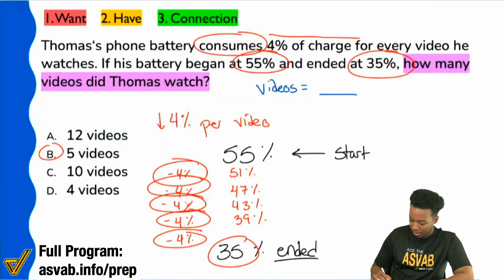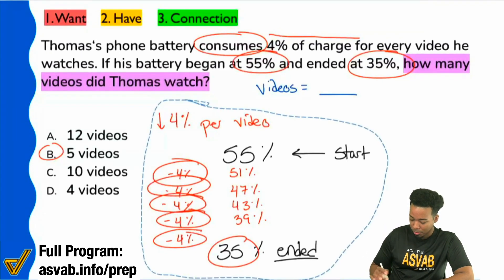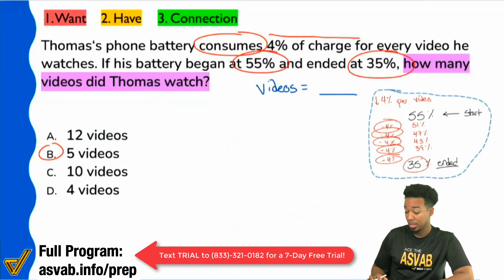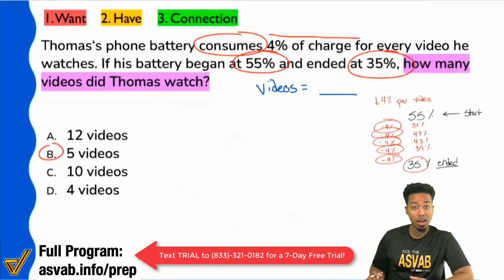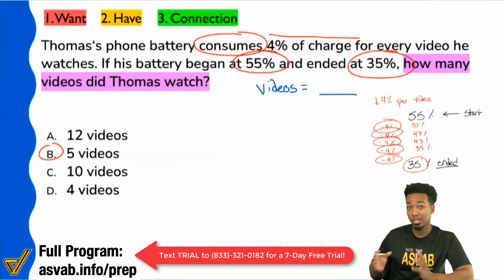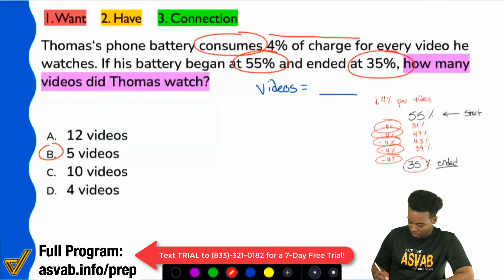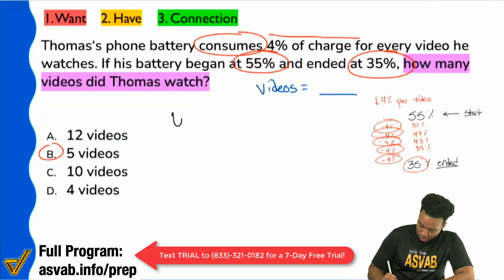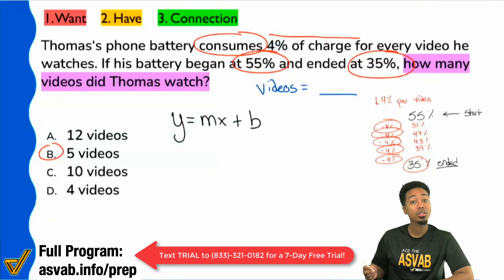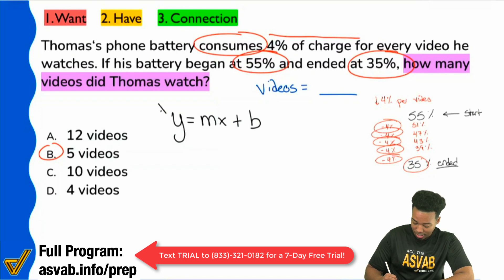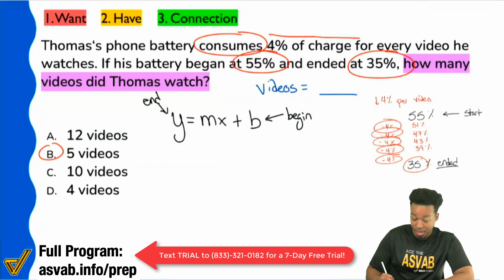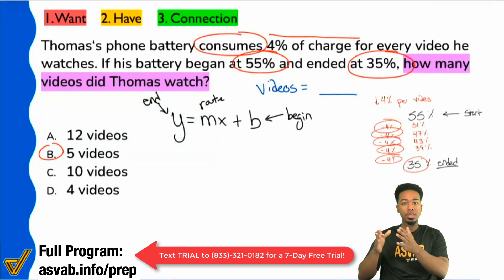Let me show you the more straightforward way. This is going to help you save time on similar problems. I can guarantee about 75% of problems on the ASVAB can be written in some form as y equals mx plus b. Here's the second way: we can simply use a linear equation — y equals mx plus b — knowing that y is the end result, b is the beginning, m is your rate, and x is going to be basically the number of events.